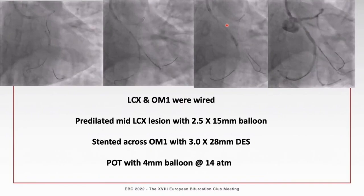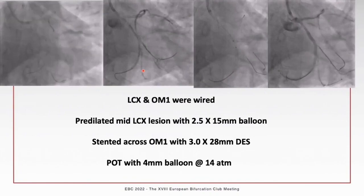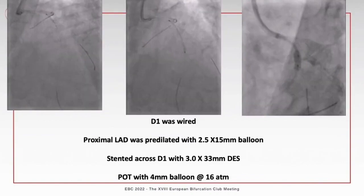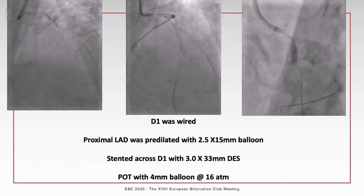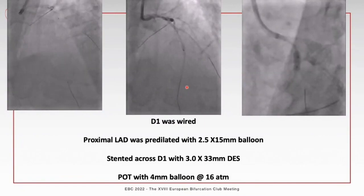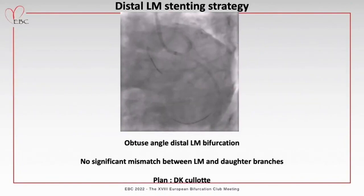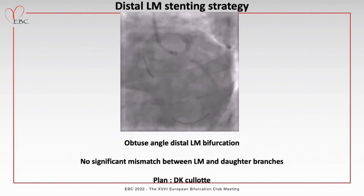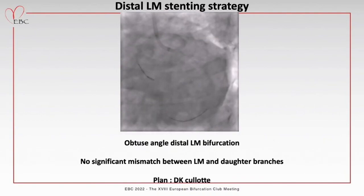The circumflex and obtuse marginal were wired, pre-dilated with a 2.5mm balloon, stented across the obtuse marginal with a 3.0 x 28mm drug-eluting stent at 14 atmospheres, followed by POT with a 4mm balloon at 14 atmospheres - angiogram confirmed well-deployed stent. Then the LAD/diagonal system was addressed: diagonal wired, proximal LAD pre-dilated with 2.5mm balloon, stented across the diagonal with a 3.0 x 33mm drug-eluting stent, and POT performed with a 4mm balloon with good results.